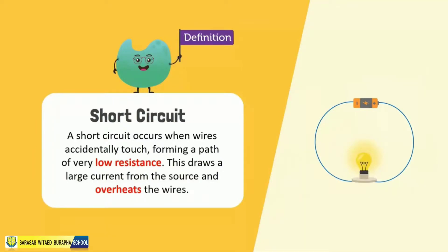A short circuit occurs when wires accidentally touch, forming a path of very low resistance. This draws a large current from the source and overheats the wires. This overheating of the conducting wires can also result in a fire.